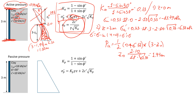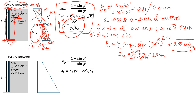So instead of 3 minus Z0, we write 1.07 meters. The area — which is the active pressure — is one half times 6.33 times 1.07, giving approximately 3.39 kilonewtons per meter. That is the active pressure acting on this 3-meter wall in a soil mass with cohesion of 10 kilonewtons per square meter.